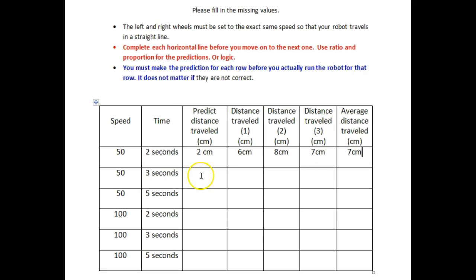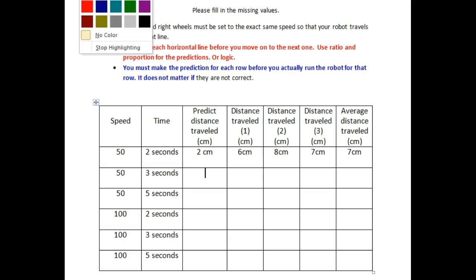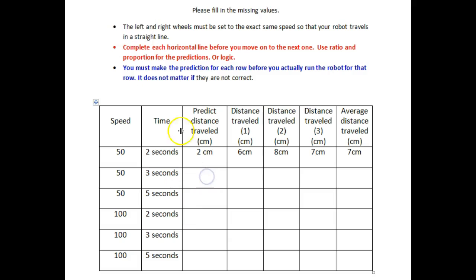Now that we have done that, we have to fill in this box. We take this figure — it travelled seven centimeters in two seconds — and we are going to use ratio and proportion. This is very simple, it's just logic. We are going to say: if it travelled seven centimeters in two seconds, how far is it going to travel in one second? Seven divided by two is three and a half. So if it travels three and a half centimeters in one second, then in three seconds it's going to travel three and a half times three seconds.